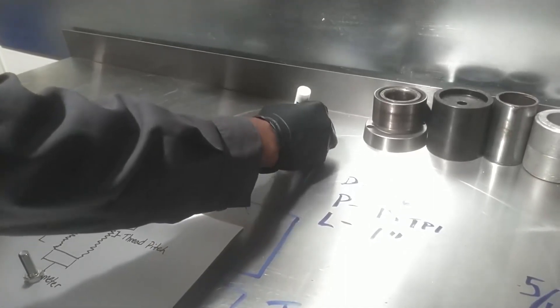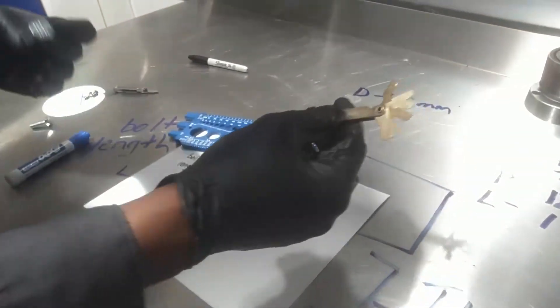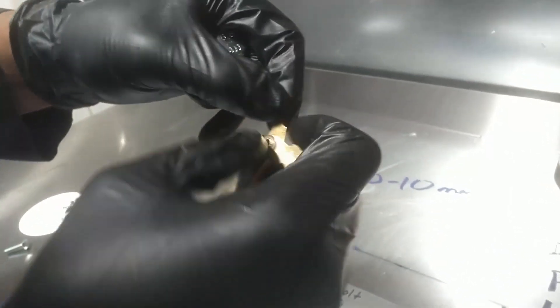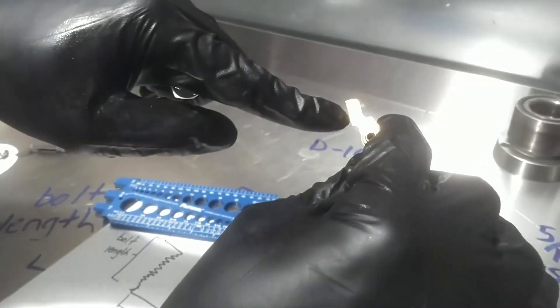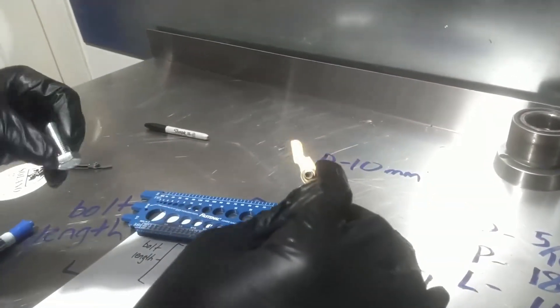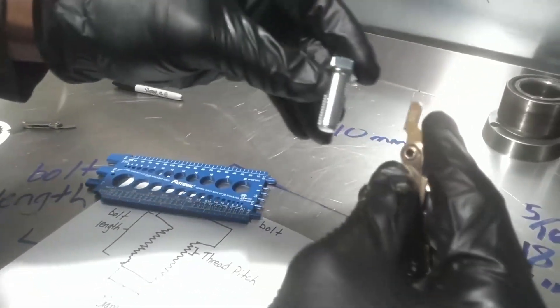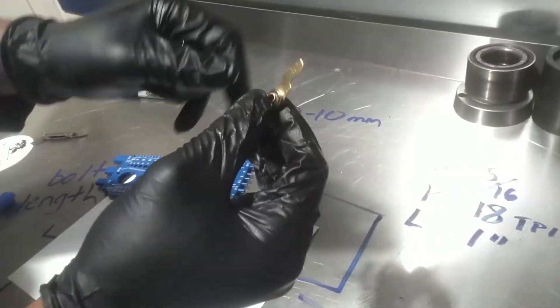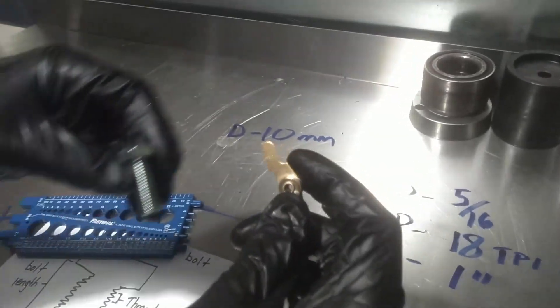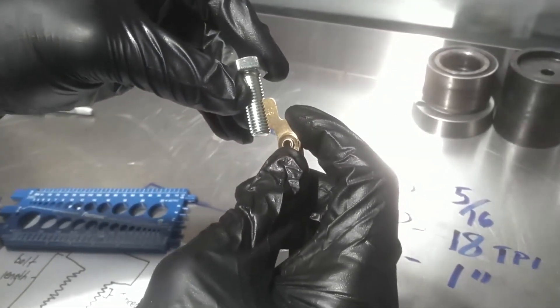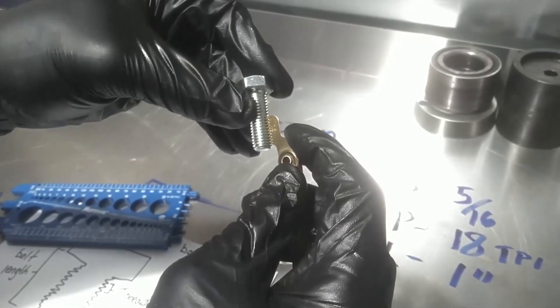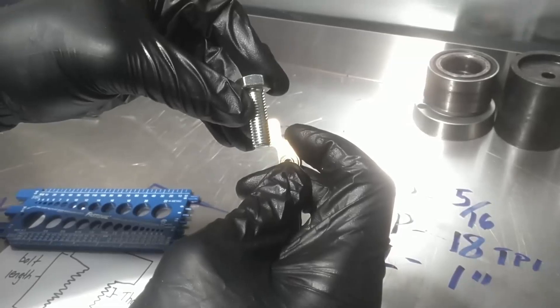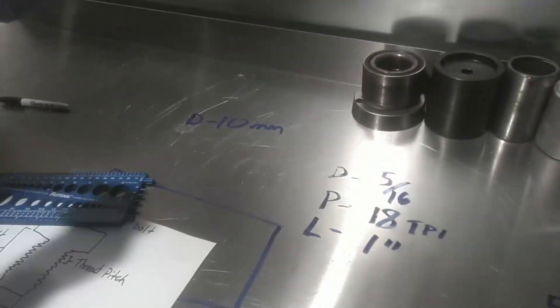Now we need our thread pitch. We're gonna bust out our trusty thread pitch gauge here. In metric we have one that is 0.75, and this is 0.75 threads per millimeter. That won't fit. You don't think so? You are correct, sir. It does not fit very well. Let's take our next best guess. Let's go with 1.5 threads. Boom! There you go. And I said threads per millimeter, but it's actually the space between the threads in millimeters. We're actually measuring with that. So that's 1.5, 1.5 is the pitch.